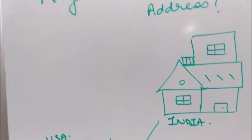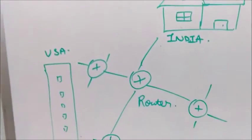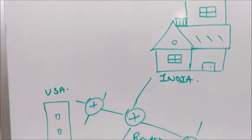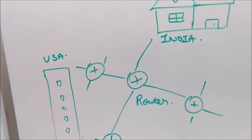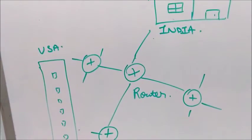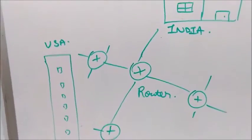Suppose you want to send a packet from India to USA, you don't need to know everything about the route. You just need to route your packet to the router and router will work at three layers, it works at network layer.